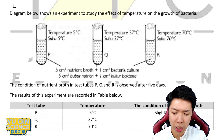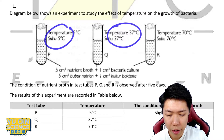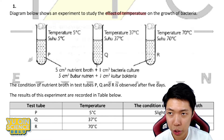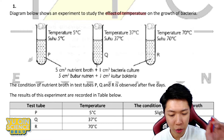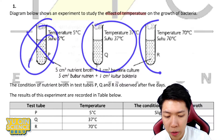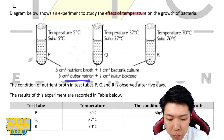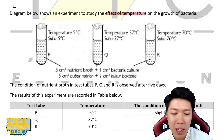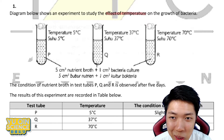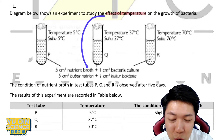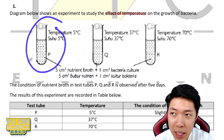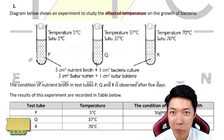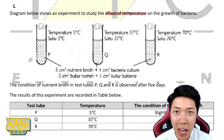We have three conditions here because we're testing temperature: 5°C, 37°C, and 70°C. So obviously, we are testing the effect of temperature. We provide nutrient broth for the bacteria — give them everything they need. But we put them in three different rooms: one is the best temperature, one is like Antarctica, and one is like a desert. I want to see which ones stay alive and which ones don't like it.